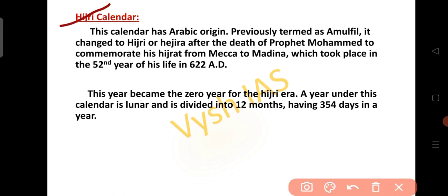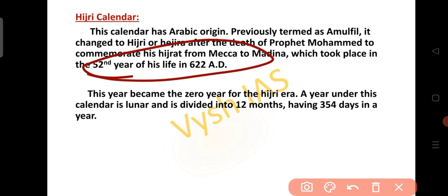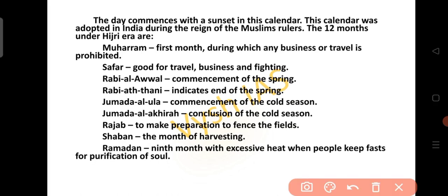The Hijri calendar is a lunar system. It is of Arabic origin, originally termed Amul Fil, and was changed to Hijri or Hejira after the death of Prophet Muhammad to commemorate his migration from Mecca to Medina, which took place in the 52nd year of his life in 622 AD. This year became the zero year of the Hijri era. A year under this calendar is lunar, divided into 12 months, and has 354 days. The day commences with sunset, and this calendar was adopted in India during the reign of Muslim rulers.